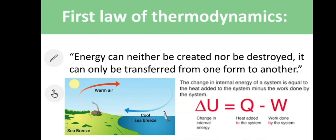The first law of thermodynamics states that energy can neither be created nor be destroyed. It can only be transferred from one form to another. The equation for the first law of thermodynamics is: the change in internal energy, or delta U, is equal to the heat added to the system, Q, minus the work done by the system, represented by W.